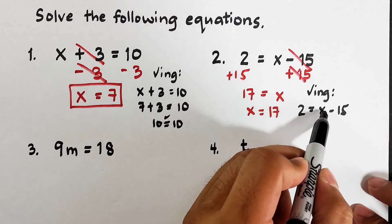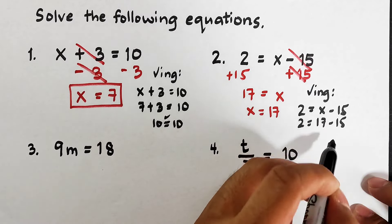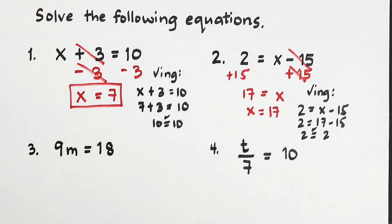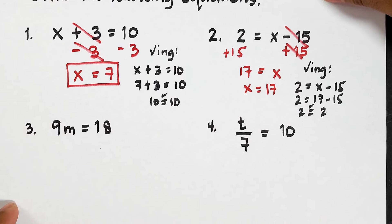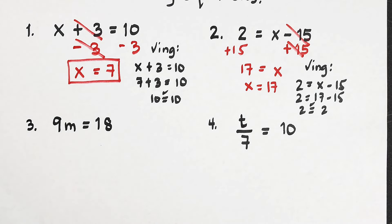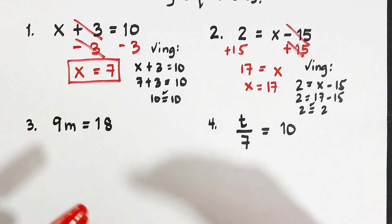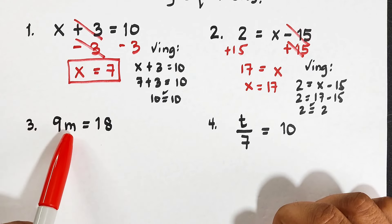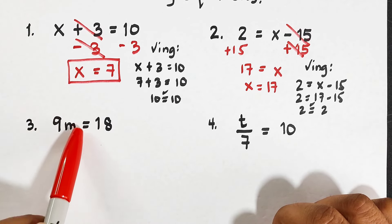If you're not comfortable with the arrangement, you can flip it and write x is equal to 17. To check: using the same equation, 2 is equal to x minus 15, replace x with 17. So 2 is equal to 17 minus 15 — that's 2. Both sides of the equation are equal. I hope you're doing well with example number 1 and example number 2.